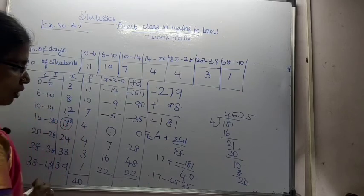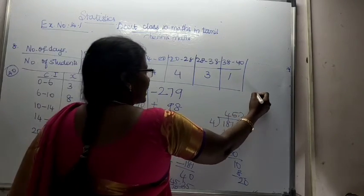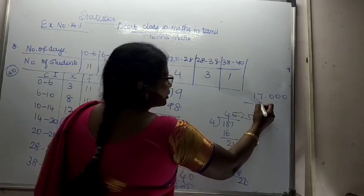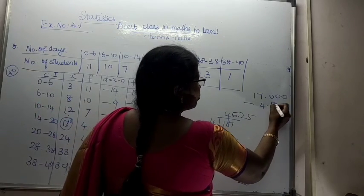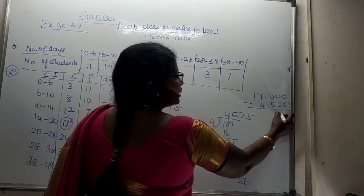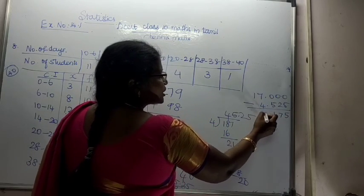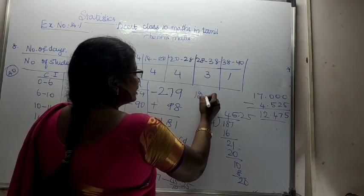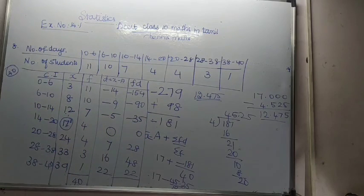So, 17 minus 4.525. Calculating: 17.000 minus 4.525. From the decimal places: 0 minus 5 requires borrowing, giving 5. 0 minus 2 minus 1 gives 7. 6 minus 4 is 2, and 1 minus 0 is 1. The answer is 12.475.